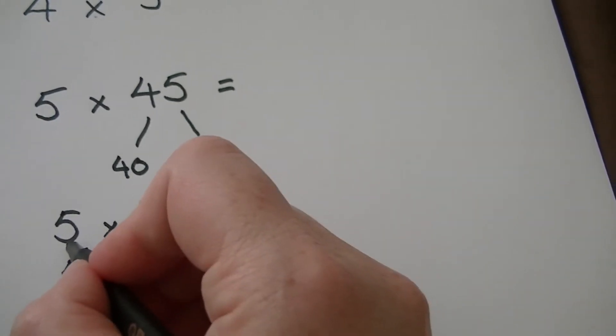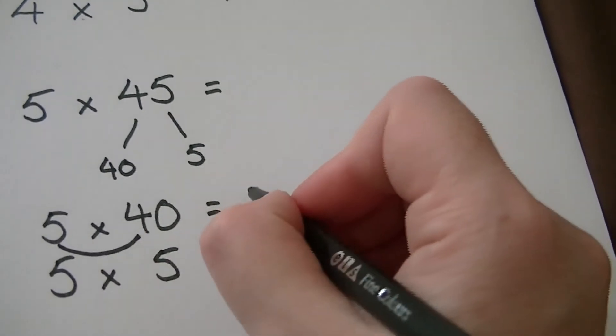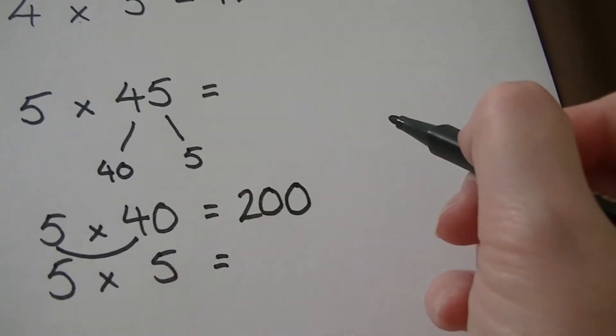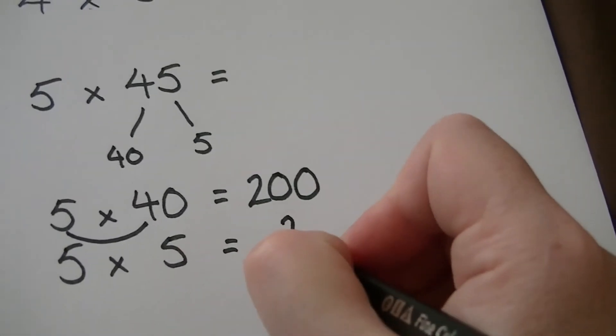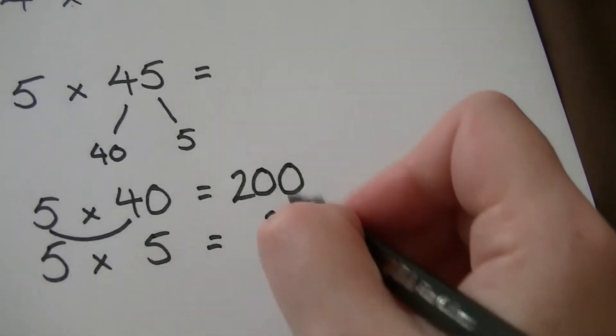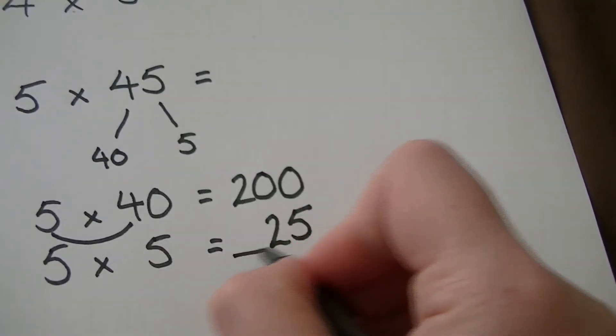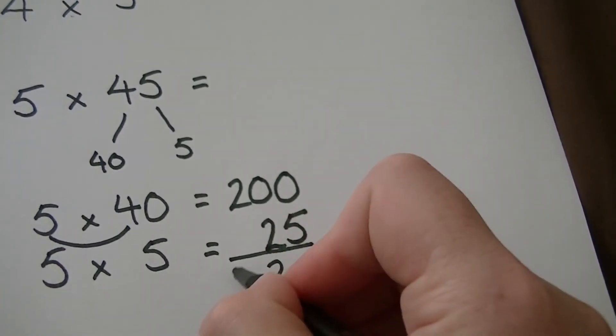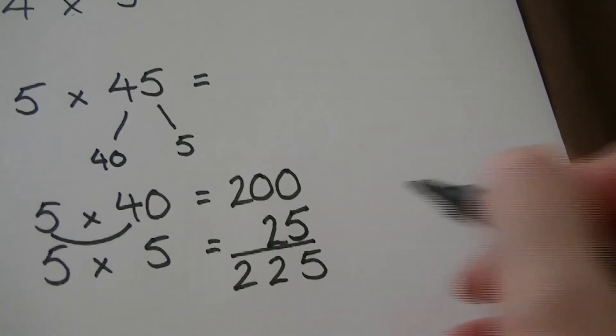Work those out. 5 times 4 is 20. Put the 0 on the end using smile multiplication. 5 times 5 is 25. If you look, I've actually written it so that it's in its column. So I can just add it up in columns like that. 225.